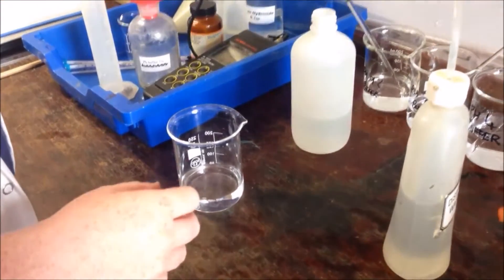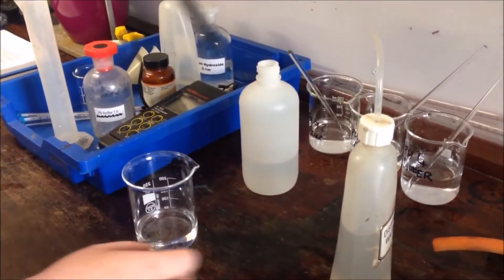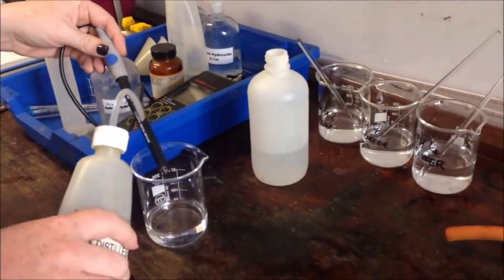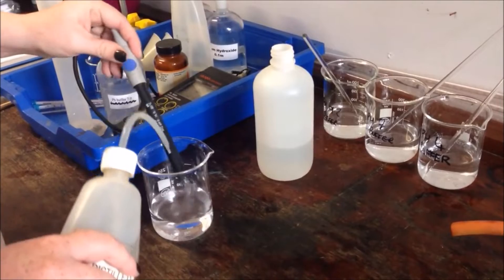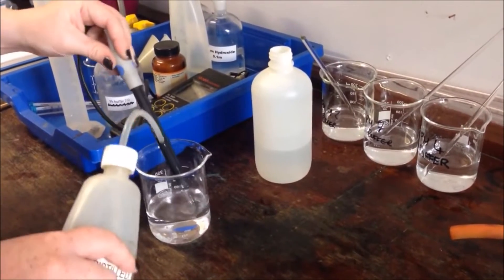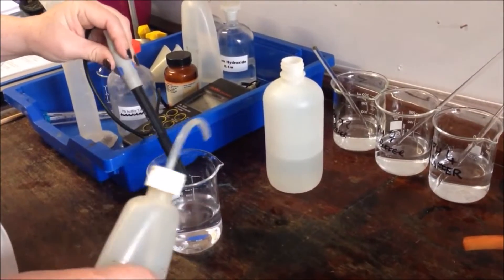We are going to be using a pH meter today. pH meters will generally come stored in a container so that the pH meter doesn't dry out. The first thing you need to do is really thoroughly rinse down your pH meter with deionized water to get anything that's hanging around there completely off it.